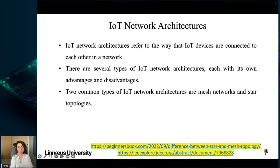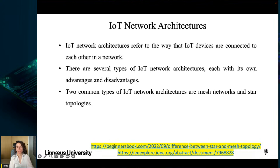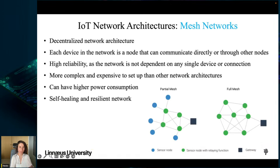Mesh networks are a type of decentralized network architecture where each IoT device acts as a node and is able to communicate with other nodes directly or through other nodes — many-to-many. The nodes work together to transmit data across the network, forming a self-healing and resilient network. You can see full mesh and partial mesh illustrated here.